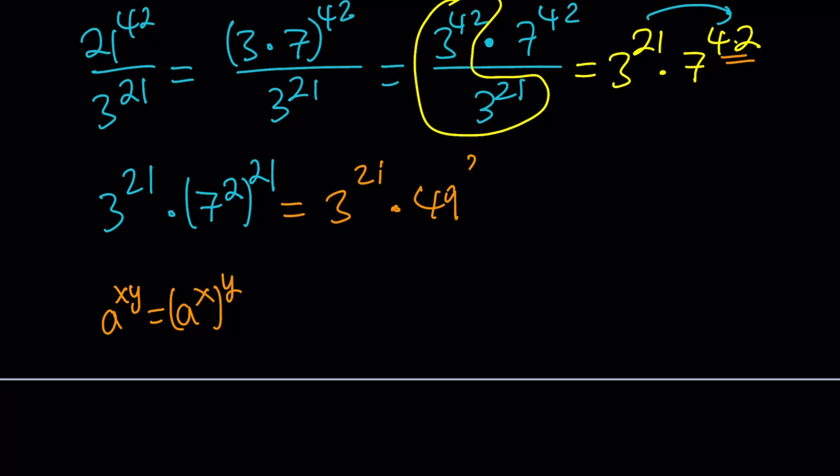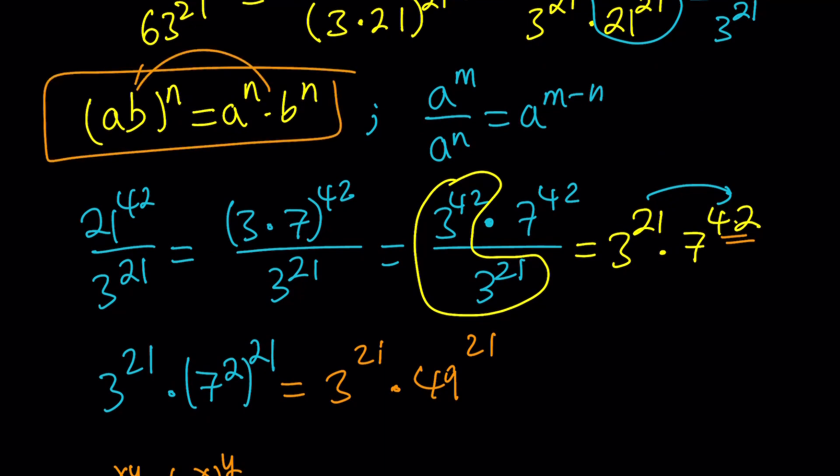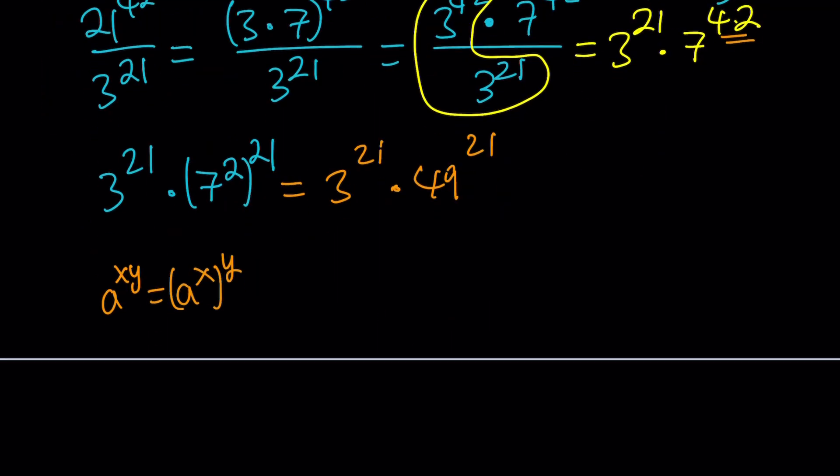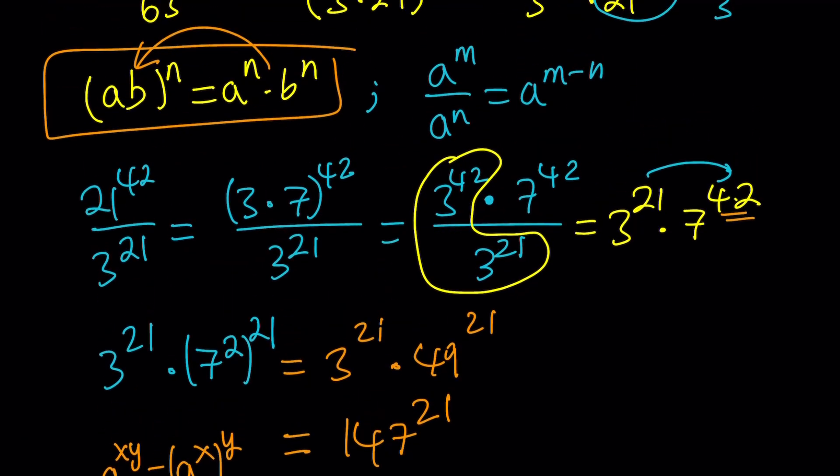7 squared is 49. So now what I have is the same exponent. Using this property, they have the same exponents, so I can go backwards and multiply the bases. 3 times 49 is, I think, 147 to the power 21, which would be my answer in the simplest form. That's what I mean by simplest form.